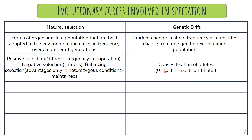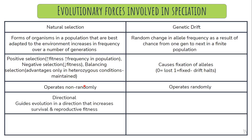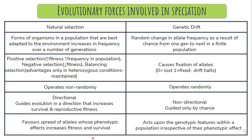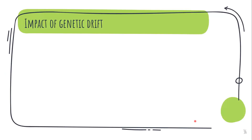Natural selection operates non-randomly — those that provide an advantage are selected — whereas genetic drift, by definition, is a random change. Natural selection is directional, guiding evolution toward increased survival. Genetic drift is non-directional and happens by chance. Natural selection favors alleles whose phenotypic effect increases survival, whereas genetic drift acts upon genotypic features irrespective of their phenotypic effect.